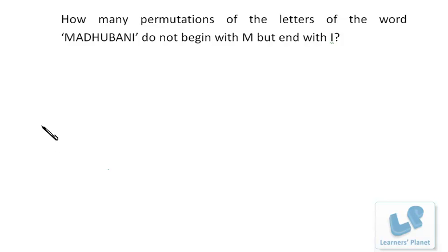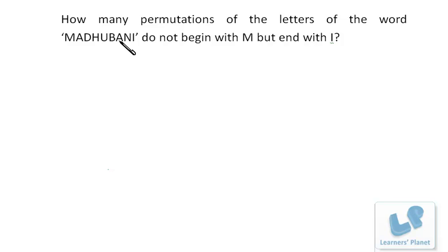Let's try this problem: how many permutations or arrangements of the letters of the word MADHUBANI do not begin with M but end with I? How many letters are there? One, two, three, four, five, six, seven, eight, nine — nine letters are there, and A is repeated two times.